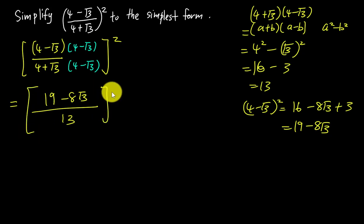Next I need to square both of them. For the bottom, 13² is easy, which is 169. But for the numerator 19 - 8√3, we need to do one more expansion.